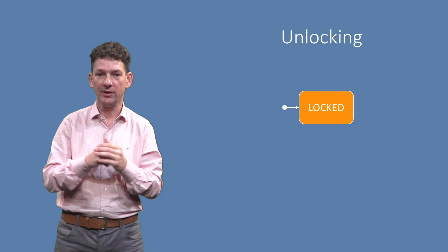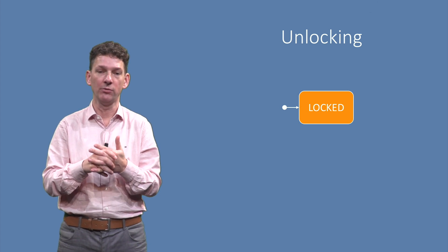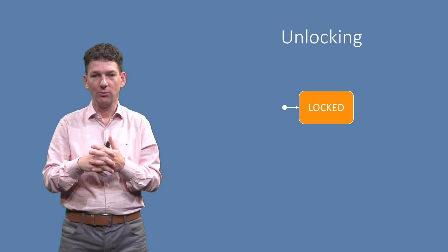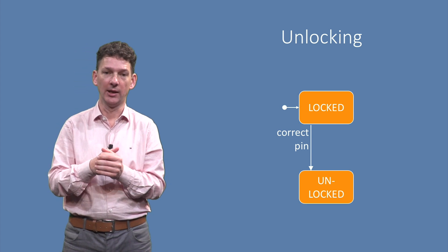Here we see a locked state, which we also mark as initial, since by default a phone is locked. We can unlock the phone by entering a correct pin, as shown in the diagram.